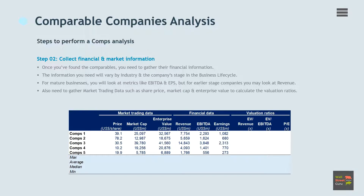The information you need will vary widely by industry and the company's stage in the business life cycle. For mature businesses, you will look at metrics like EBITDA and EPS. But for earlier stage companies, you may look at revenue. You also need to gather market trading data such as share price, market cap, and enterprise value to calculate the valuation ratios.